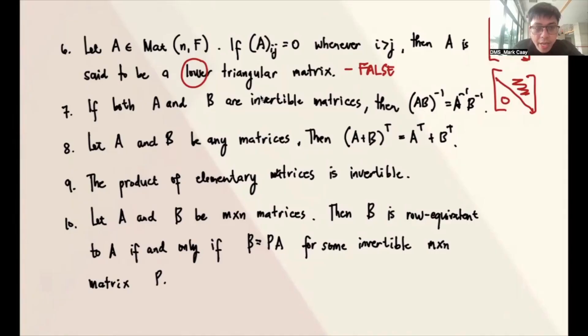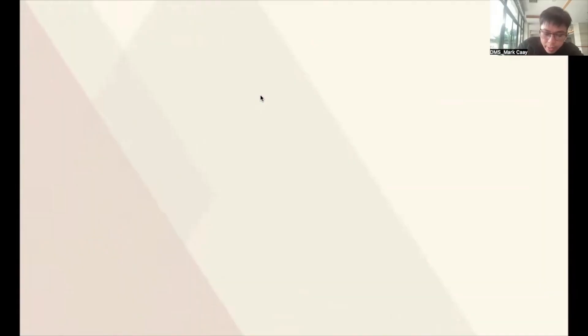Number 7, if both A and B are invertible matrices, then this one. Actually, we have a theorem for this already in class. If A and B are both invertible, the inverse of the product is this one. And in fact, it's easy to show if this is true. If this is invertible, that means A times its inverse is I, and B times its inverse is I.